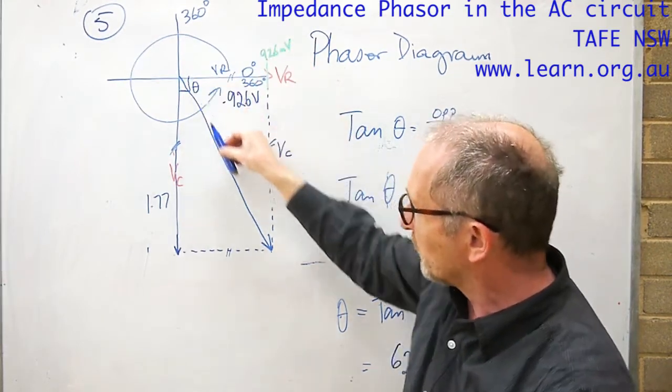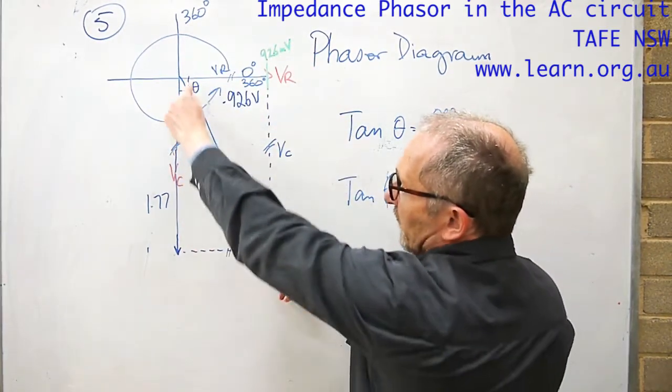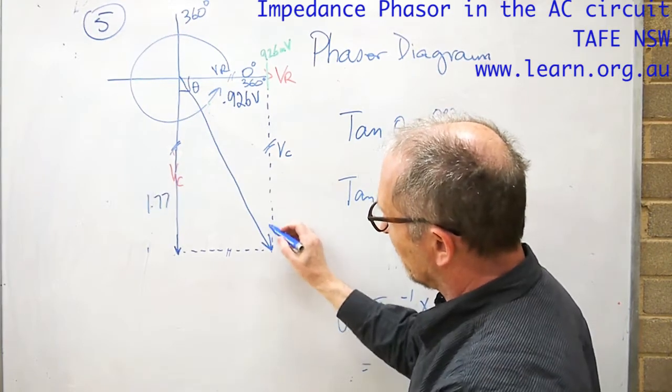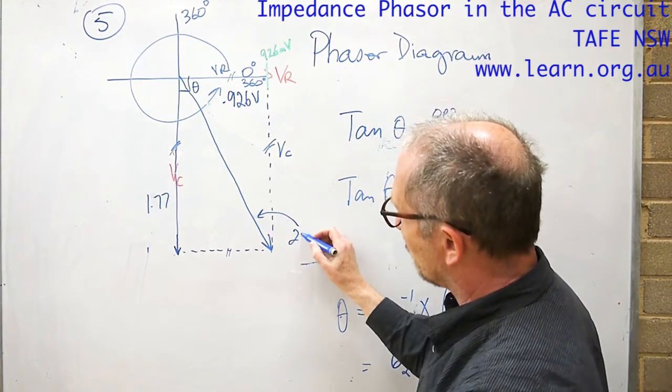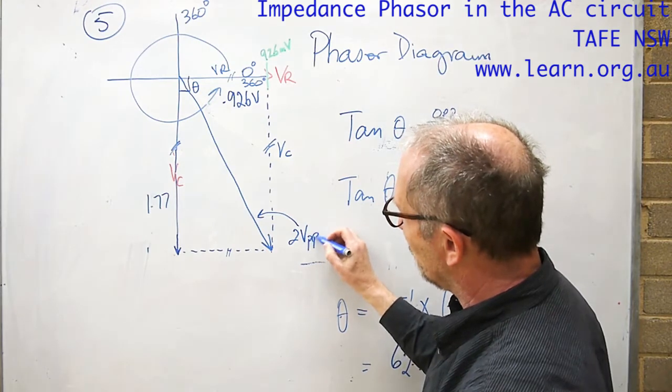What's coming from the signal generator, we know the length of that phasor already. The length of that phasor was in our experiment today 2 volts peak to peak.